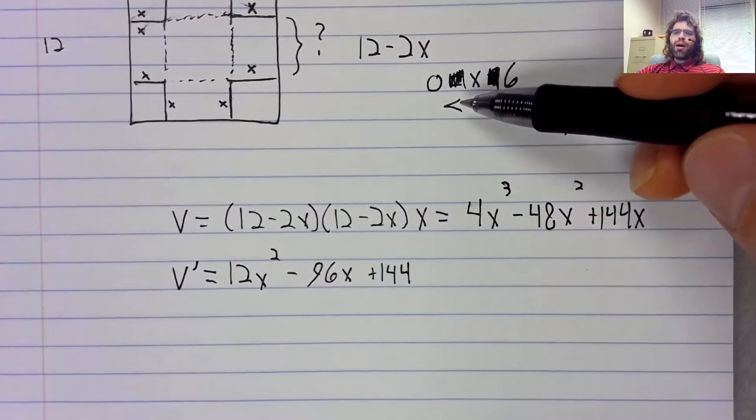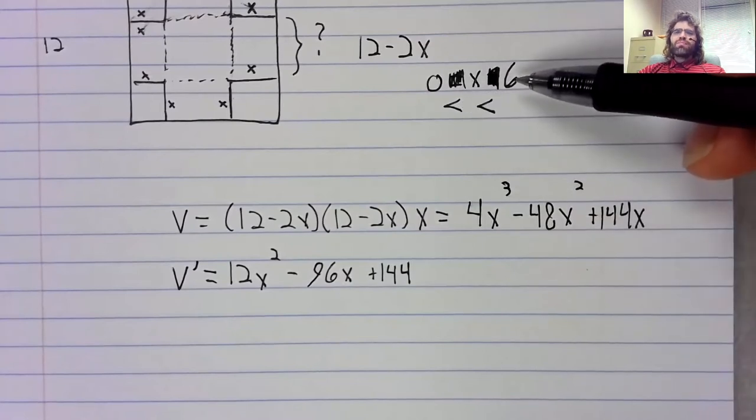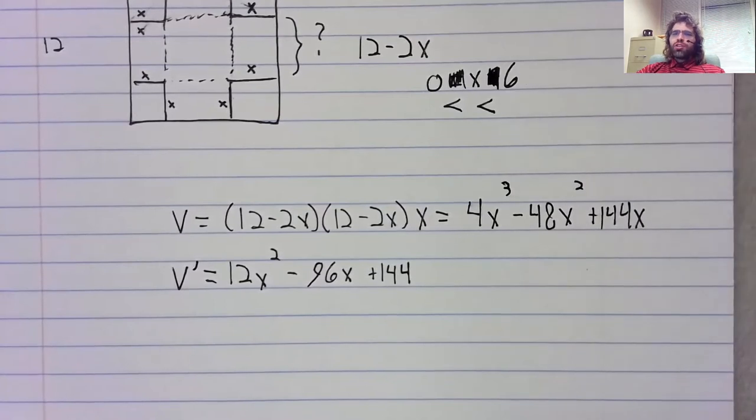x can't be 6. If x were 6, there would only be flaps. The box wouldn't have a bottom. So we're not on a closed interval, but we're looking for an absolute maximum. We don't even know that an absolute maximum exists if we're not on a closed interval.